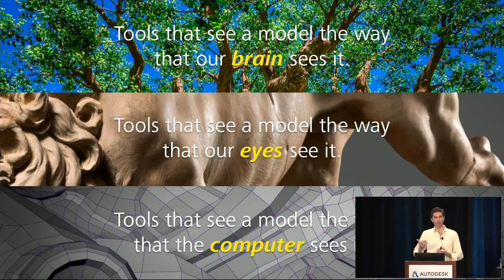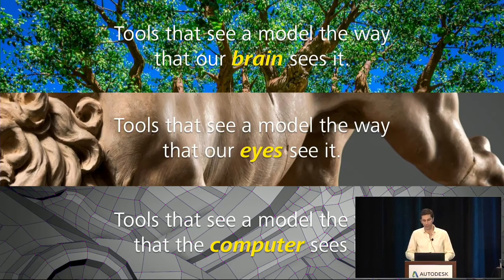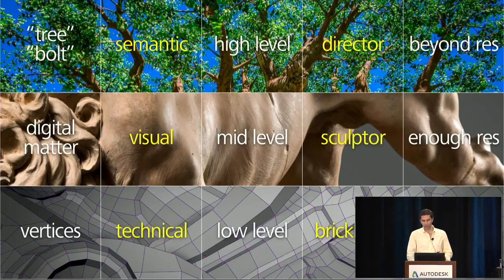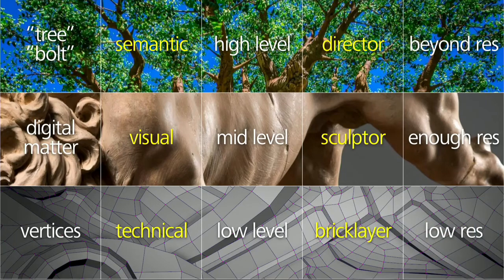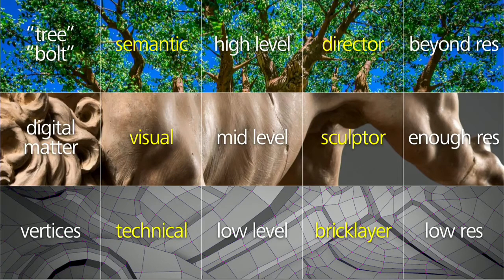The third stage is tools that see a model the way that our brain sees it. Our brains are wonderful things — they're able to pick out letters from a noisy background and make sense of words in a semantic way. In the same way, this is about bringing more sophistication to our tool set and to what the tools can see and do. So instead of just seeing vertices in digital matter, maybe we're able to see a tree or a bolt — operating on a semantic representation of the model at a higher level, raising the artist to the role of a director, and exploding the concept of resolution. Resolution becomes just an output option, a slider.